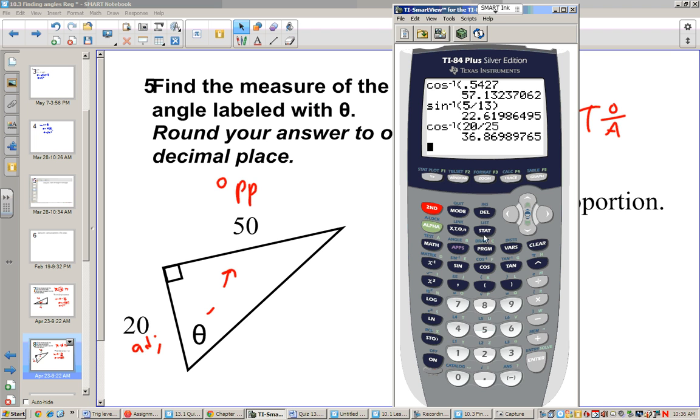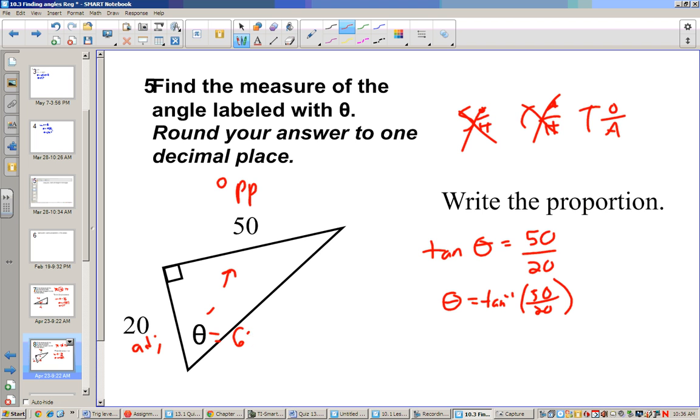And inverse tangent of 50 over 20 is 68.2 degrees. Or we're rounding to 68 right now. 68 degrees is our angle in the triangle.